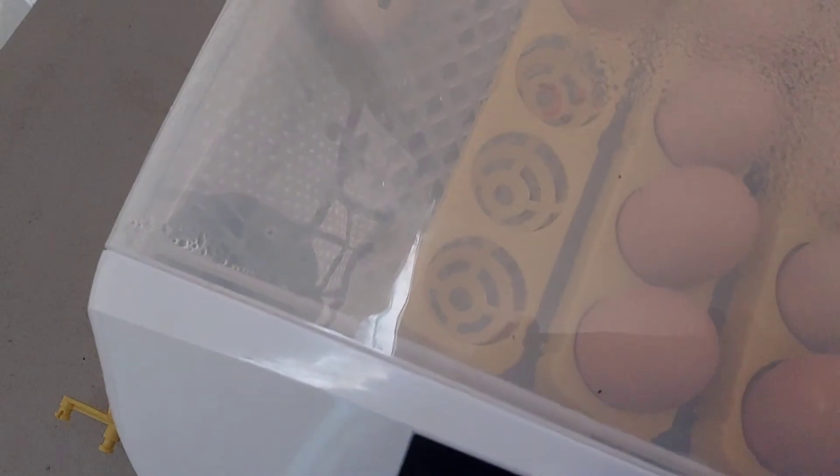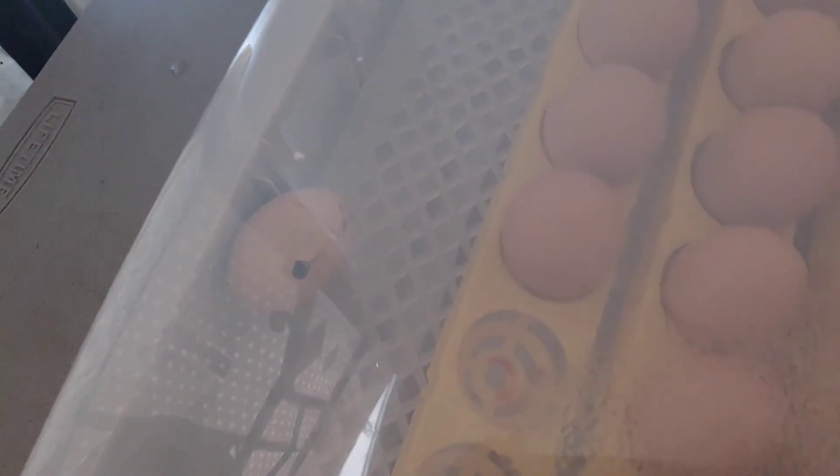So I took out just the first section of egg turner, which you can do with this unit, this Asian 56 egg incubator, and we're going to keep an eye on this guy.